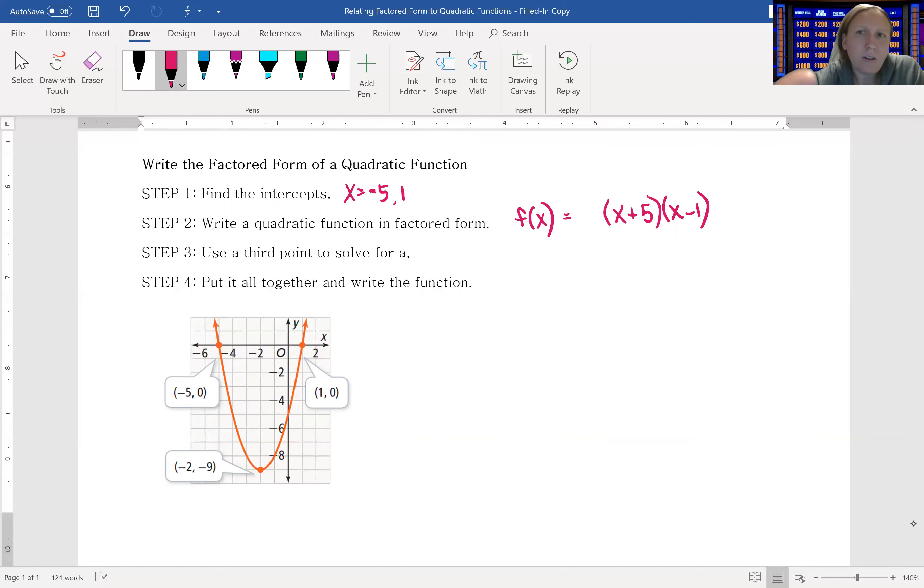But now the thing is, there could be some a value. I mean, there's going to be an a value. Sometimes that a value is just one, sometimes it'd actually be another number. So we need to figure out what that a value is. And to do that, we're going to use a third point.